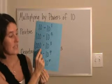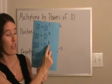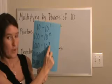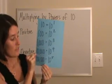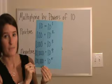1000 is the same thing as 10 to the third power. Exponent is 3. Three zeros. 10 to the fourth and 10 to the fifth are the same.